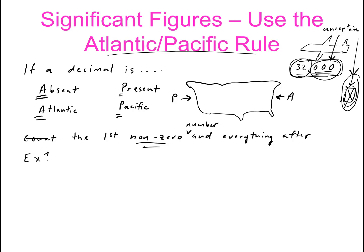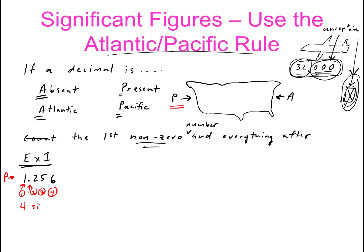Example one: 1.256. Is a decimal point present? Yes, it's right here. So we start counting from the Pacific side. Where is the first non-zero? We look at the number and see that it's not a zero, so we count it. It says count the first non-zero and everything after. So this is 1, 2, 3, 4. This number has 4 significant figures, or 4 sig figs.